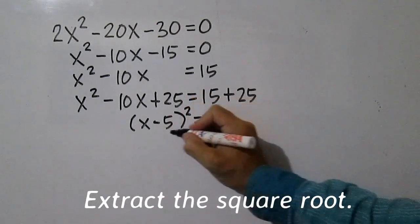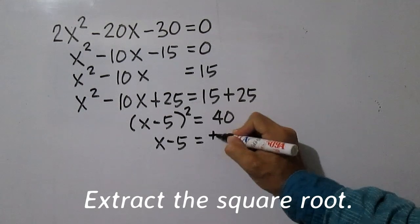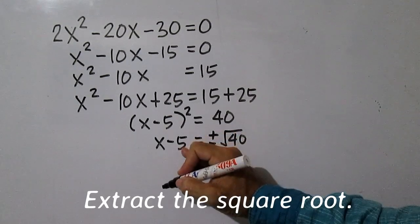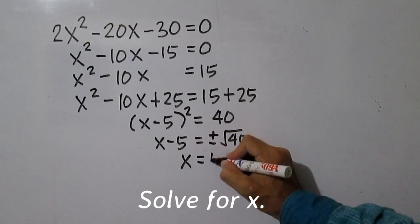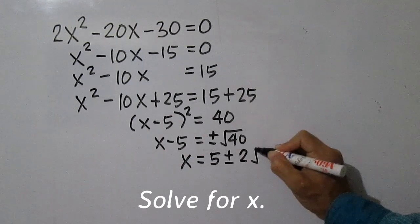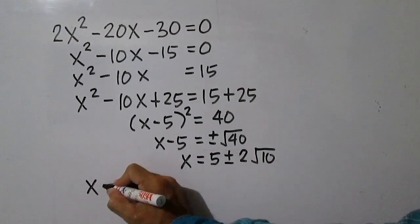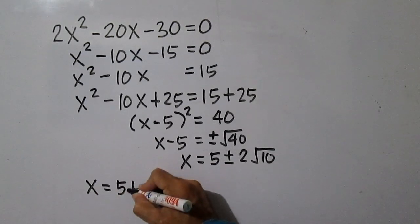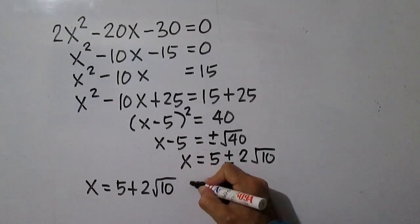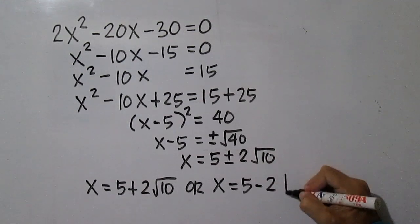Solve the resulting quadratic equation by extracting the square root, then solve the resulting linear equations. The values of x are x equals 5 plus 2 square root of 10, or x equals 5 minus 2 square root of 10.